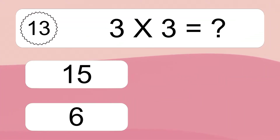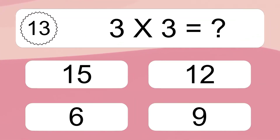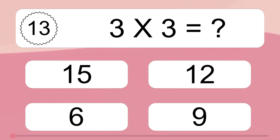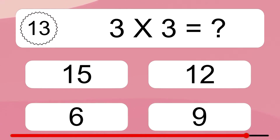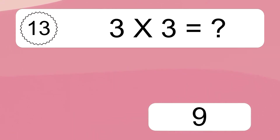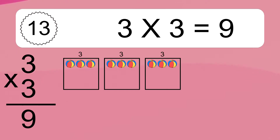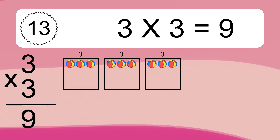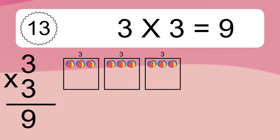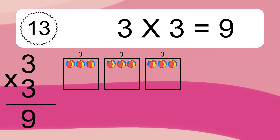3 times 3 equals what? 3 times 3 equals 9. We have 3 boxes and each box has 3 colorful balls inside. If you count all the balls in all the boxes together, you will have 3 times 3 balls. This equals 9 balls.